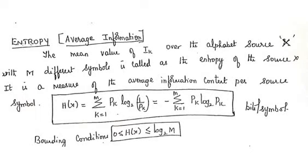Now, what is entropy? Entropy is nothing but the average information per message. It is also defined as the mean value of IK, where IK is the amount of information. The mean value of IK over the alphabet source X with M different symbols is called entropy of source X. It is also a measure of average information content per source.